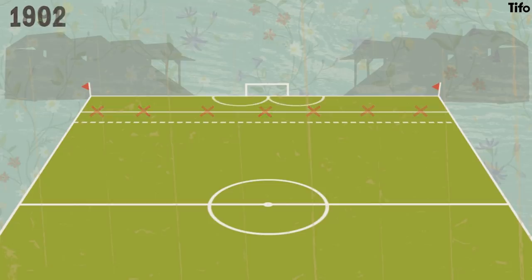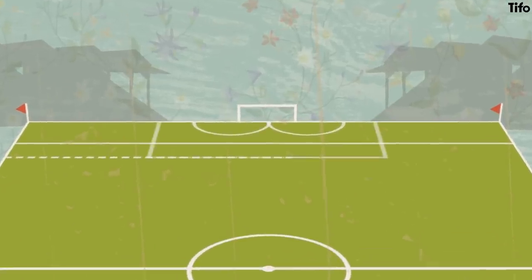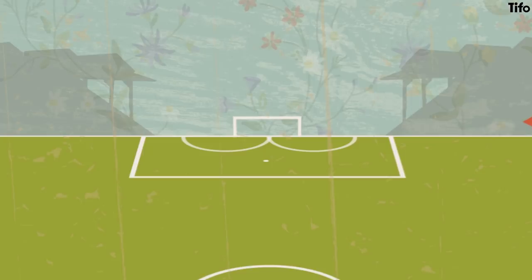Then, in 1902, there would be a further evolution. The penalty area became the box that it remains today, and the 12-yard line was reduced to a spot. The 6-yard box also ditched its original design, becoming a much more sensible-looking rectangle.